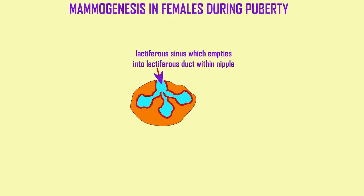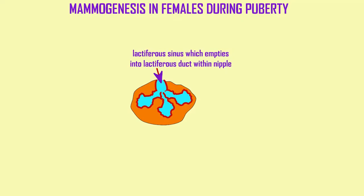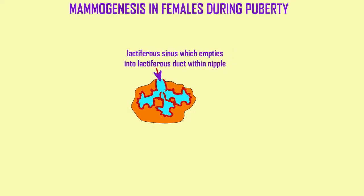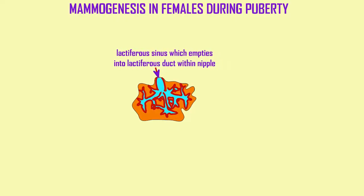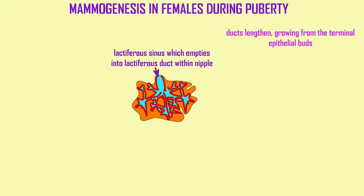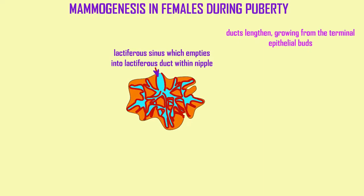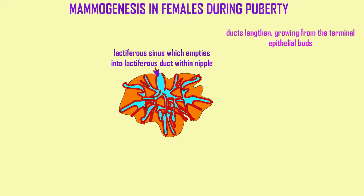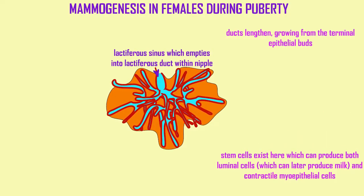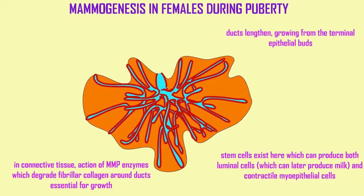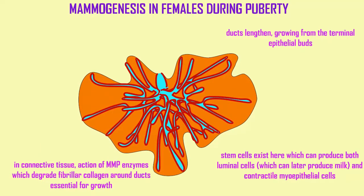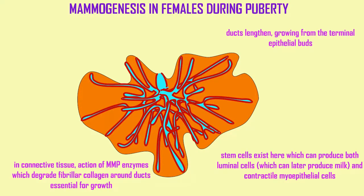During puberty, the ducts in the mammary glands lengthen, growing primarily from the tips — from the terminal epithelial buds. Cells divide here, and it is shown that stem cells exist here, which can differentiate and produce both the luminal cells, which can later produce milk, and the myoepithelial cells, which can contract. In addition to the growth of epithelial cells, the connective tissue also must grow and modify, as MMP enzymes are degrading the collagen which surrounds the ducts, and this is essential for growth.